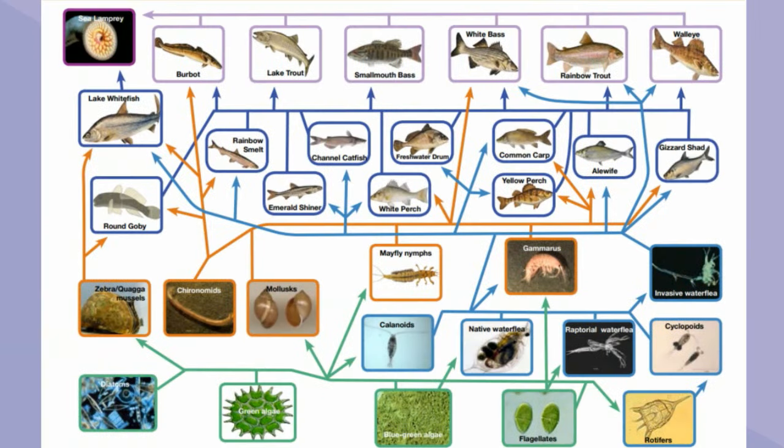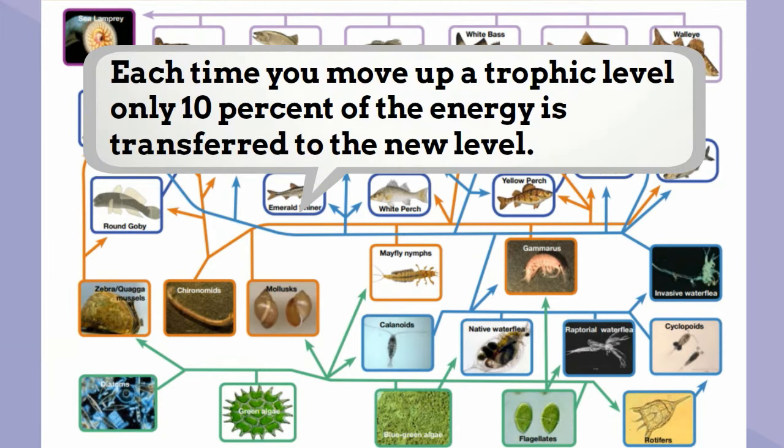As one individual consumes another, you move up a trophic level. The 10% rule states that each time you move up a trophic level, only 10% of the energy is passed to the new level.